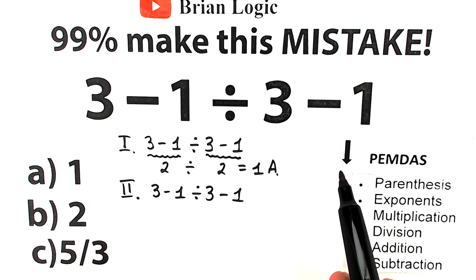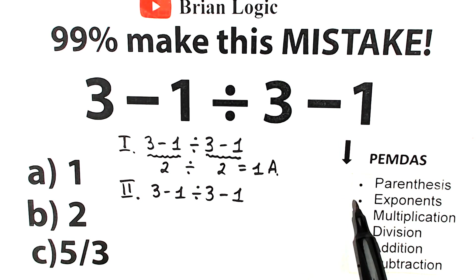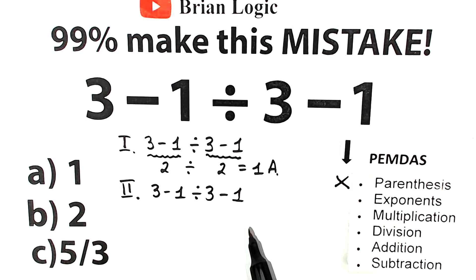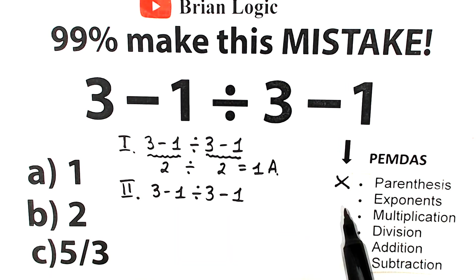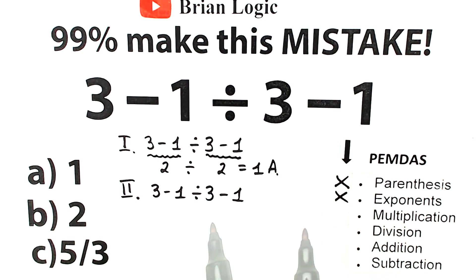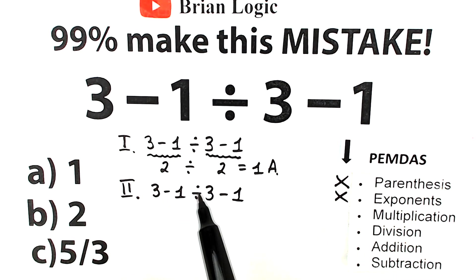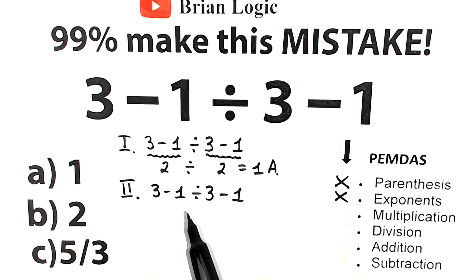Let's start scanning from the top in strict order. First step: parentheses — I don't see any brackets, so we skip this. Next: exponents — no exponents, no powers, squares, cubes, or any powers at all, so we skip this part too.